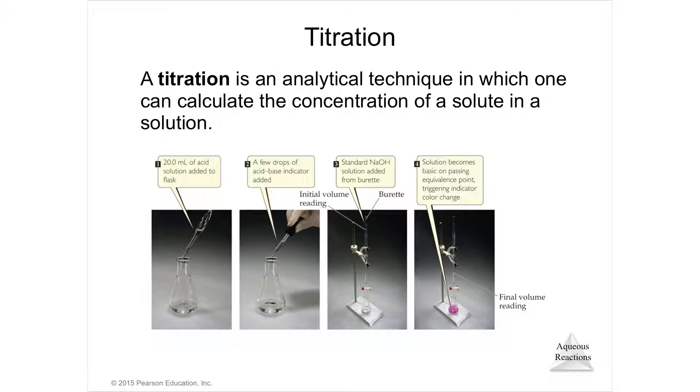You use titration whenever you're trying to find the concentration of something unknown. Let's imagine I've got a big jar and all it says is hydrochloric acid. I don't know what its concentration is. That means I can't ever use it. If I don't know the concentration, it's useless to me because I need the concentration in order to go through calculations and know what I've got and what I'm getting. The way you figure out a concentration for something you don't know is by titration.